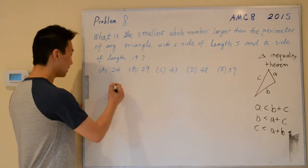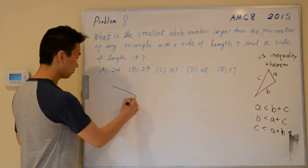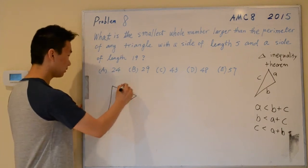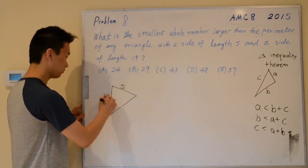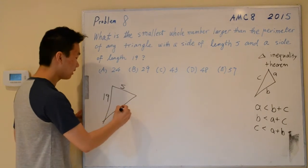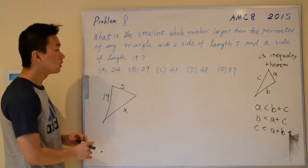So, our triangle should look something like this, and let's call the third length x.